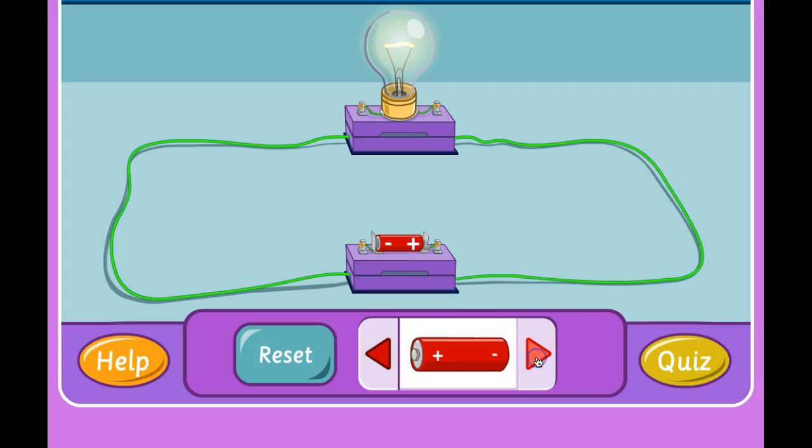I wonder what would happen if we placed a battery with the positive going to the left. Interesting. The bulb still lights up, but now our electricity is flowing in the other direction.